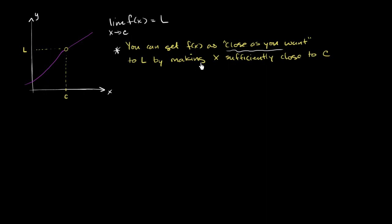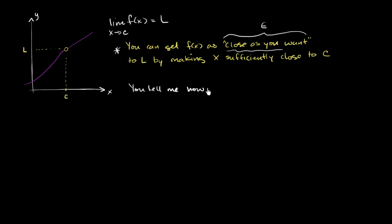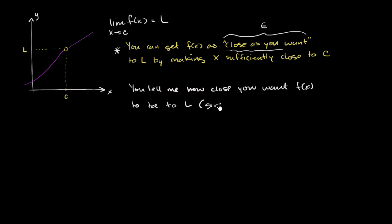So let's see if we can put a little bit of meat on it. So instead of saying 'as close as you want,' let's call that some positive number epsilon — I'm just going to use the Greek letter epsilon. So it really turns into a game. You tell me how close you want f of x to be to l, and you do this by giving me a positive number that we call epsilon, which is really how close you want f of x to be to l.